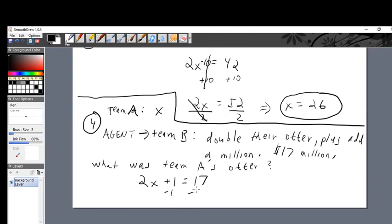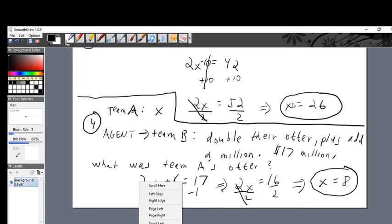Minus one on left, minus one on right. This is gone. 2X is equal to 16. Divide by two on left and divide by two on right. X is equal to eight. Eight million was the first offer by team A. And what he asked team B was to double it and add another million. But here is the answer. Eight million was what team A's offer was. Okay, there we go.